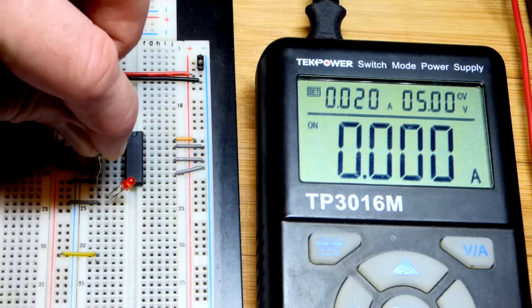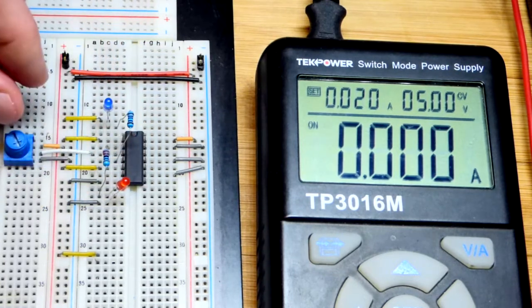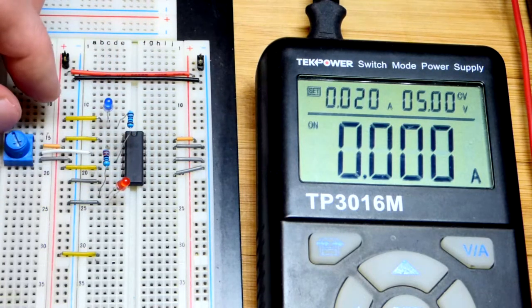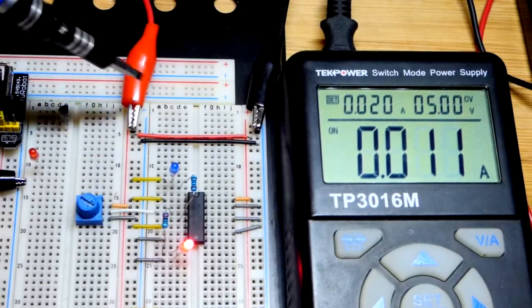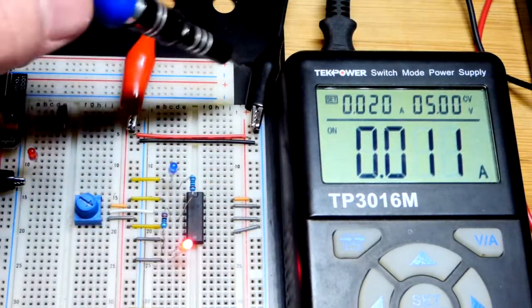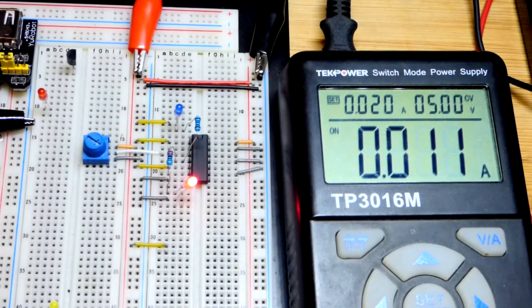We have the red LED which should have turned on. Now I attach the alligator clips coming from the power supply, and we have power. As you can see, the red LED is lit.